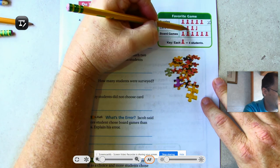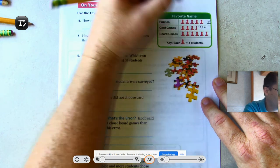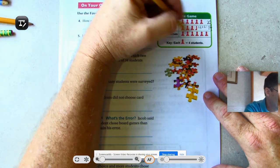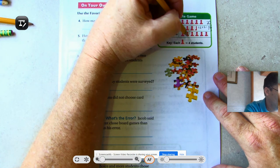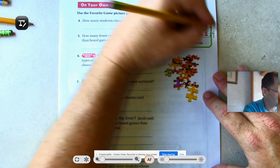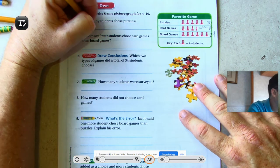Twenty students chose puzzles. 4, 8, 12, plus two. Half of four is two. 14 for card games. And board games: 4, 8, 12, 16, 20, 24. How many students chose puzzles? Twenty students.